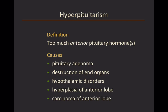Two main syndromes to know: hyperpituitarism and hypopituitarism. Hyperpituitarism means too much anterior pituitary hormone — one or more. There are several causes, but by far the most common, and the one to focus on, is pituitary adenoma. If someone presents with too much pituitary hormone, it's probably going to be a pituitary adenoma.